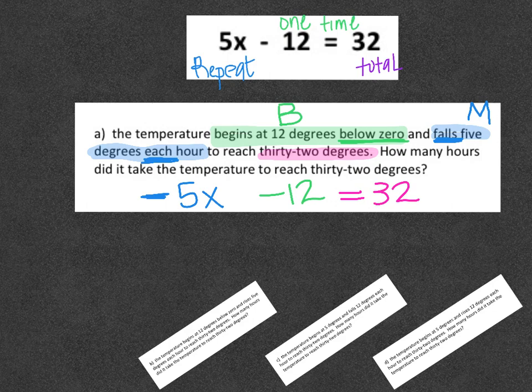I'm going to look at this and see if it matches. 5x in the original equation up here at the top was a positive number. 5x down here in this scenario was negative because it said falls 5 degrees each hour. So that means this one is not correct. This answer choice would be wrong because it gives us the wording for negative 5x.